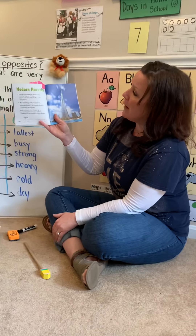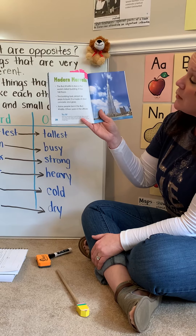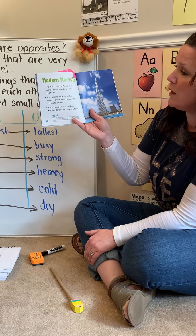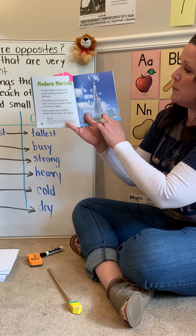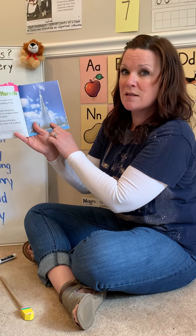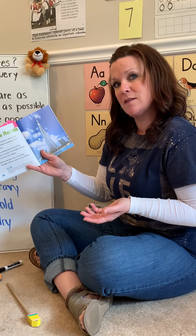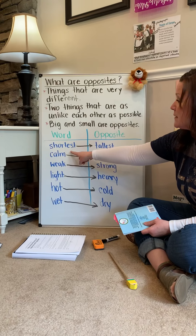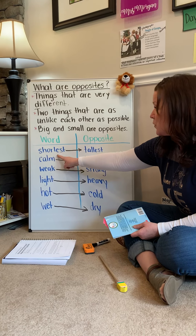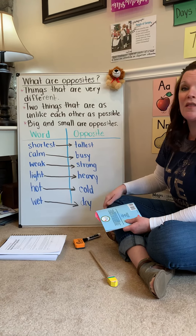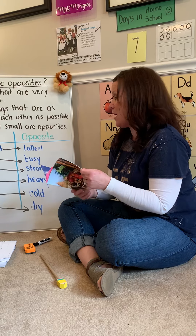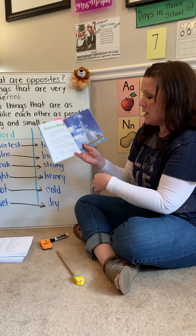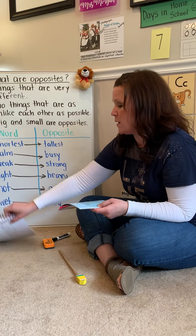In Modern Marvels, it says the Burj Khalifa in Asia is the world's tallest building. It has 160 floors. She describes this building using the adjective tallest. What's the opposite of that, friends? Tallest is the word, and the opposite is shortest. Shortest, tallest — they're opposites. Understanding that they are opposites might help you understand the meaning of the word tallest even better.